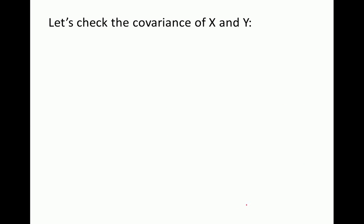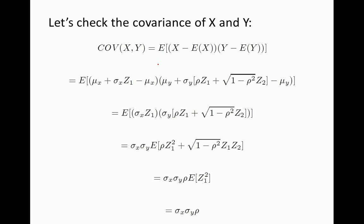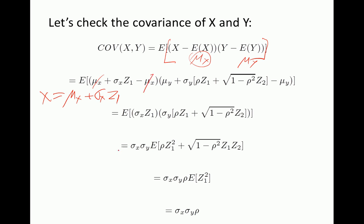Let's check what the covariance between x and y is, since we're interested in generating correlated normal random variables. The formula for covariance is the expectation of (x minus mu x) times (y minus mu y). Substituting x equals mu x plus sigma x times z1, the mu x terms cancel out. Similarly for y, the mu y terms cancel, giving a simplified expression.